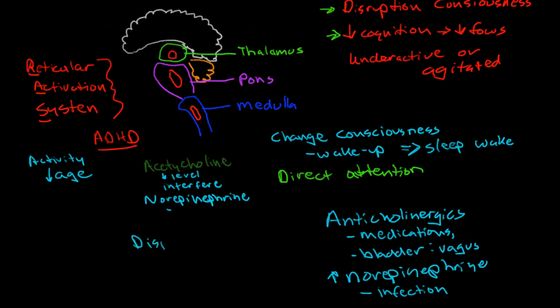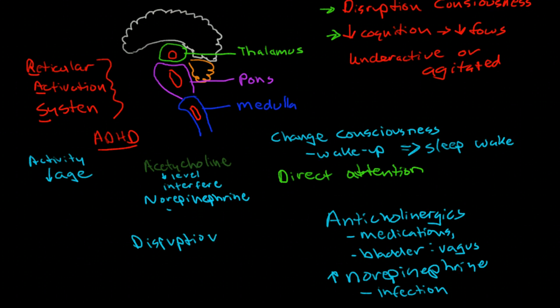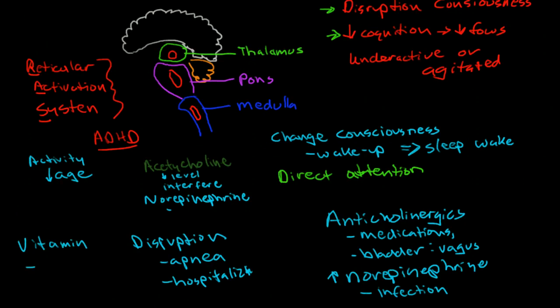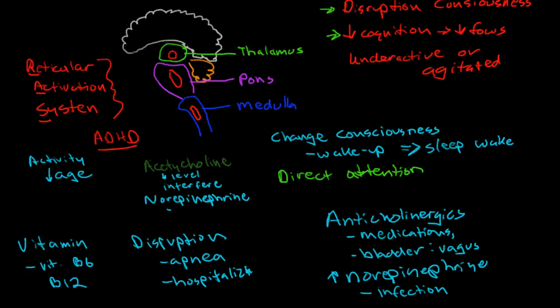Disruption of the sleep-wake cycle, so sleep apnea. Hospitalization, because we tend to wake patients up every couple of hours. And the list goes on. Working up a patient with acute delirium, actually vitamin deficiencies—I'm not sure of the exact mechanism, but it probably has some effect on the acetylcholine or the acetylcholine receptors. So B6 and B12. If you look at the table in the reading I assigned on delirium, it will give you a very lengthy list of different things that can cause delirium. So the workup can be sometimes very tricky.